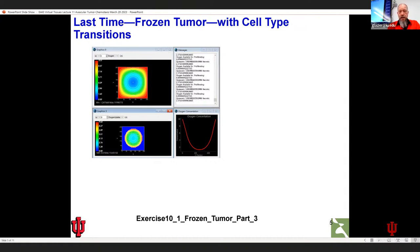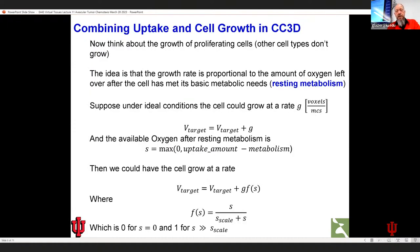The cells first stop dividing and then die, producing these three-layered tumors: a necrotic core in the middle, surrounded by a layer of quiescent cells that are still alive but not dividing, and then at the surface a layer of proliferating cells. At the end of last time, we were starting to talk about how to combine all of this with cell growth, which the homework was trying to address in more detail.